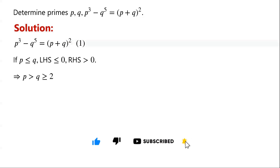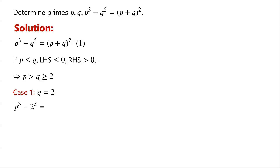Next we will divide the problem into different cases. Case 1: if q equals 2, then equation 1 becomes p cubed minus 2 to the power of 5 equals p plus 2 all squared. Expanding: p plus 2 all squared equals p squared plus 4p plus 4.